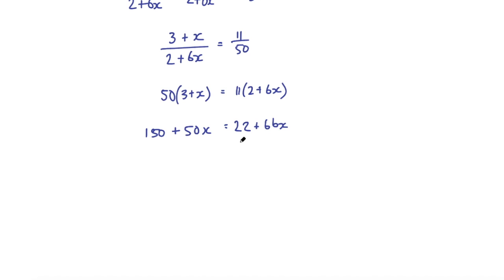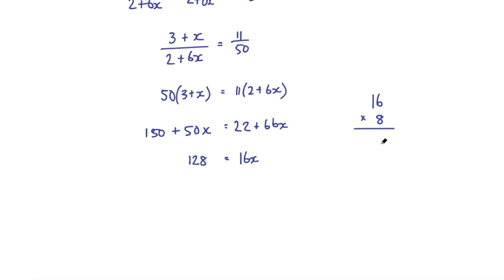Subtracting 22 from both sides: 150 minus 22 is 128. Subtracting 50x from the right side: 66x minus 50x is 16x. So 128 equals 16x. To find x, I divide: 16 times 8 is 128, so x equals 8.